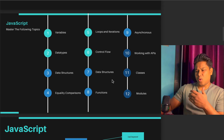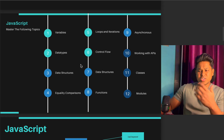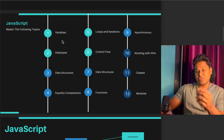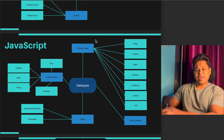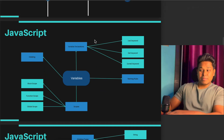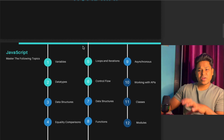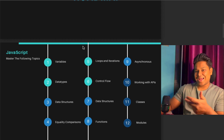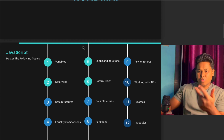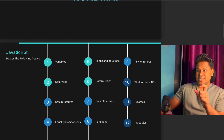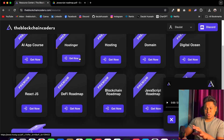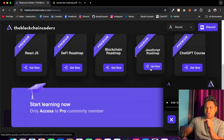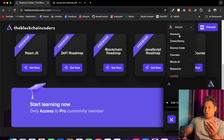I'm going to provide a PDF highlighting exactly what you have to learn in each of these topics. For example, under variables it details what to learn, and similarly for data types and all the others. These highlighted topics are crucial — you'll use them over and over when interacting with smart contracts, the blockchain, and back-end APIs for getting and displaying data. You can come to the resource section on the channel, click 'Get Now,' and download this PDF.